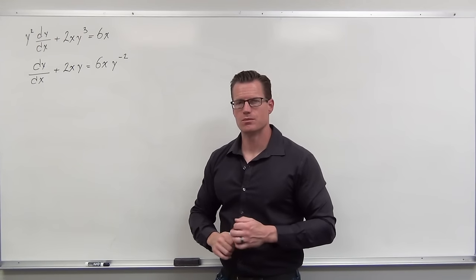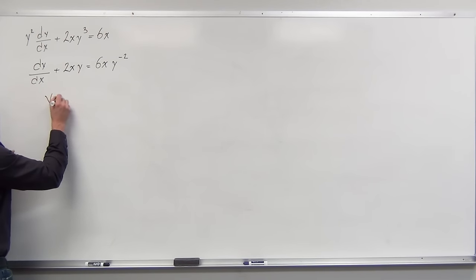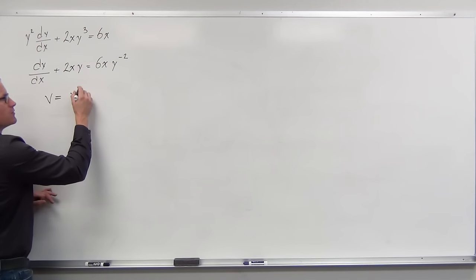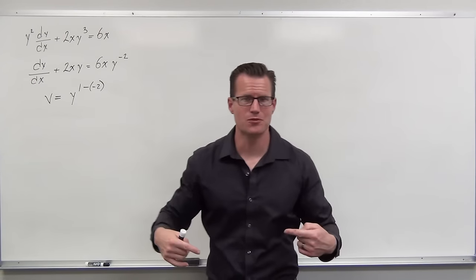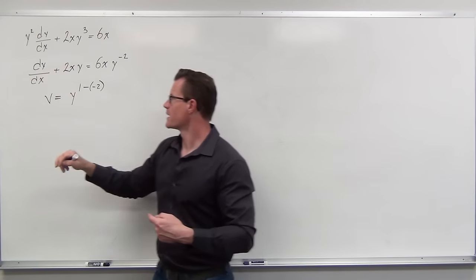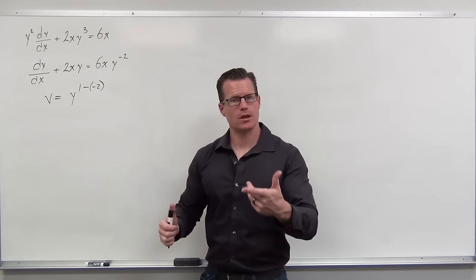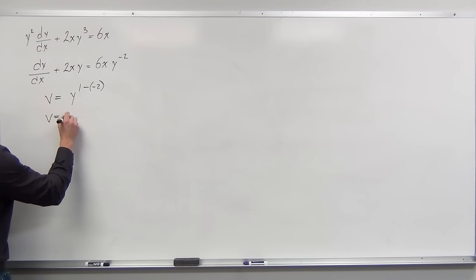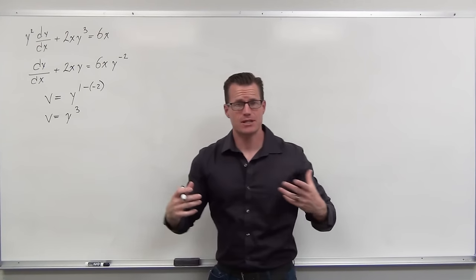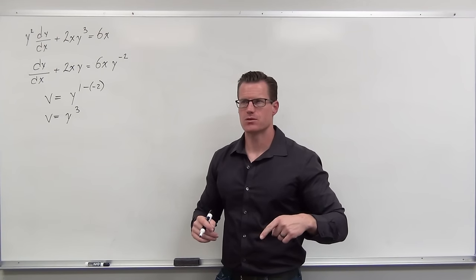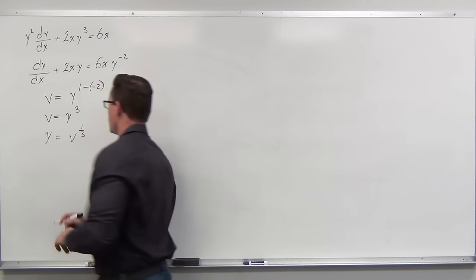Dividing by y squared: dy/dx over y squared, then you get y, and 6x over y squared. But now we look at it and go: that's really close to linear! If that last term wasn't there, it'd be linear. Do you have two terms — one with y to the first power, one with y to not the first power? That's why we wrote it as y to the negative two instead of 6x over y squared, so we can fit the Bernoulli equation model.